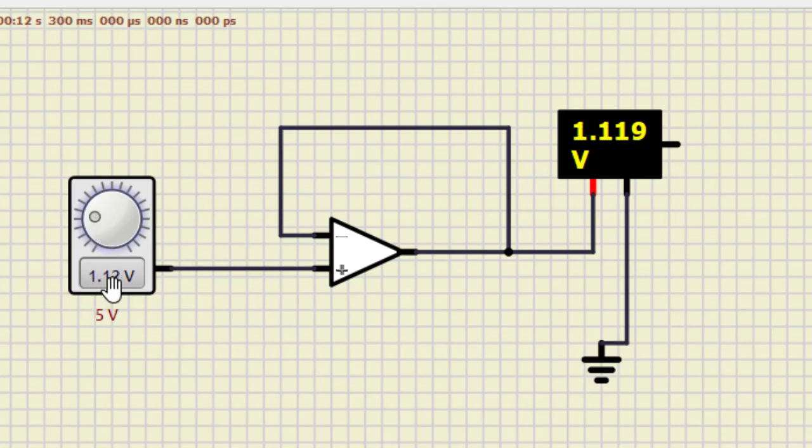So now input is 1.12 volt. So there's almost 1.1. Then if we increase this voltage to around 2, 2.31. So we are getting almost 2.3.